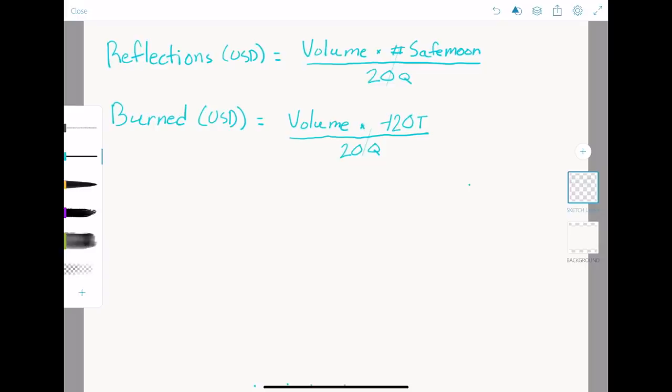By replacing Reflections with burned, we can see that burned equals volume times the number of coins in the burn wallet divided by 20 quadrillion. Now this is nice, but remember this answer is in USD, which we don't care about when evaluating the burn wallet. We only care about how many SafeMoon are burned specifically. So we need to divide this answer by the price of SafeMoon, or just squeeze the price into the denominator.